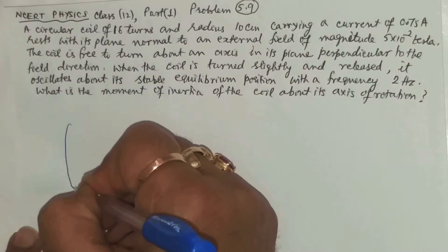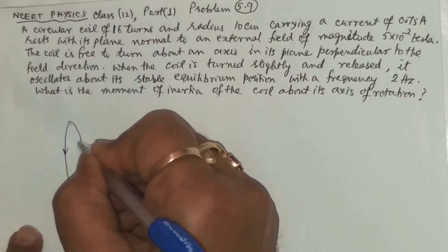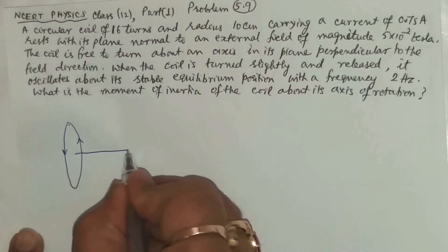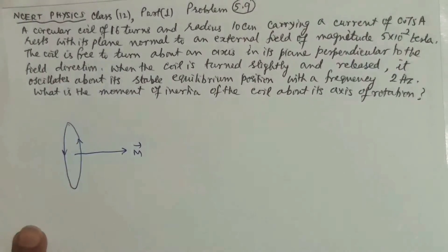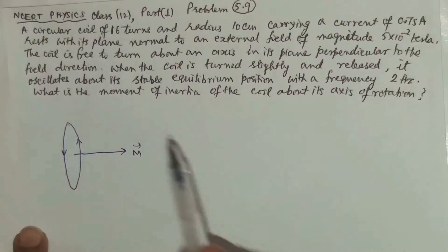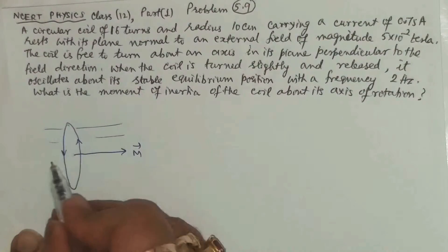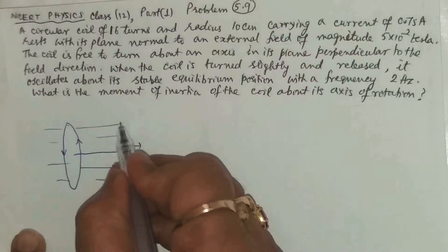If this is a turn, there may be some current, and as per this current, this is the magnetic moment. The external magnetic field is also along this direction.